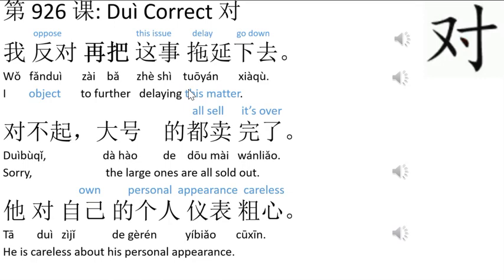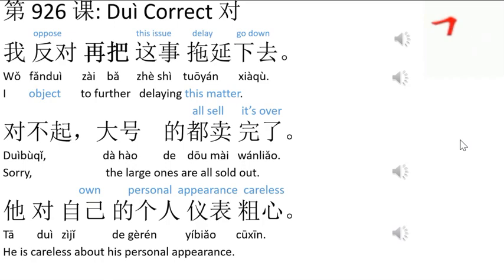第九、二、五、六. This is the word we are looking for: 对. You write like this. One, two, three, four, five — 对 means correct.